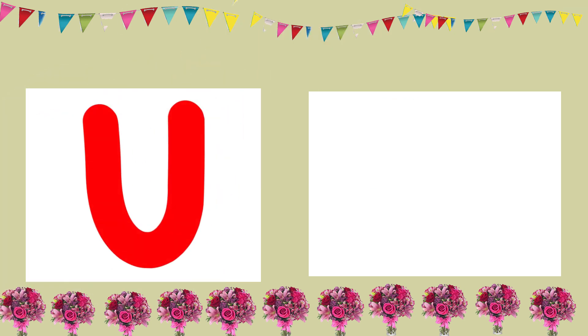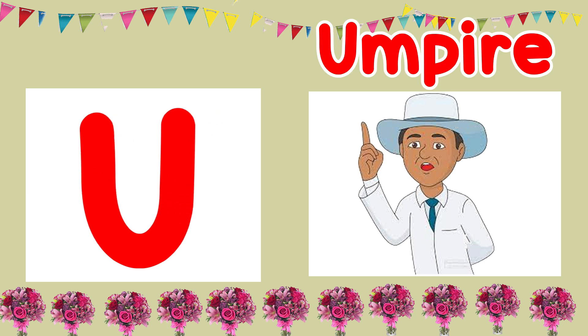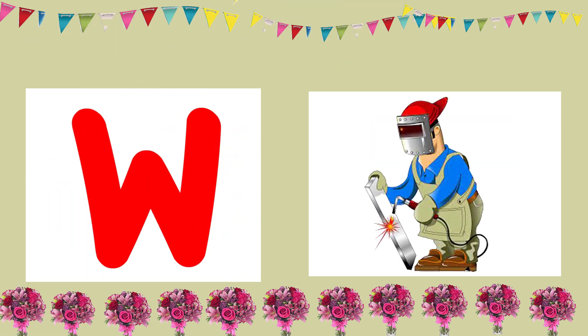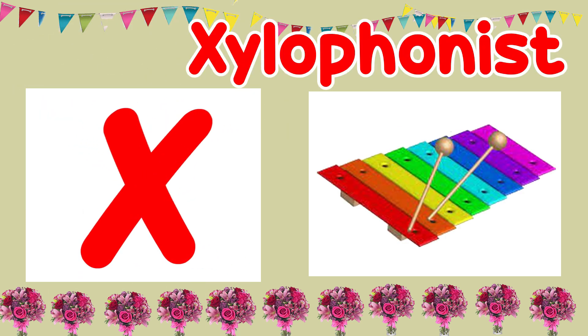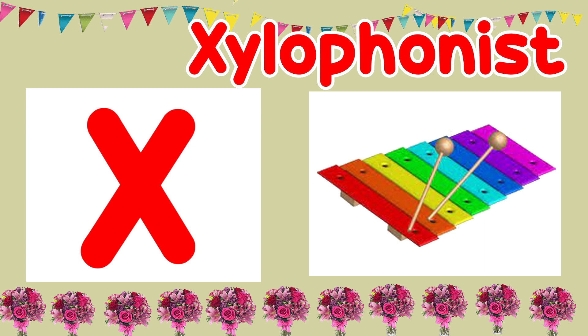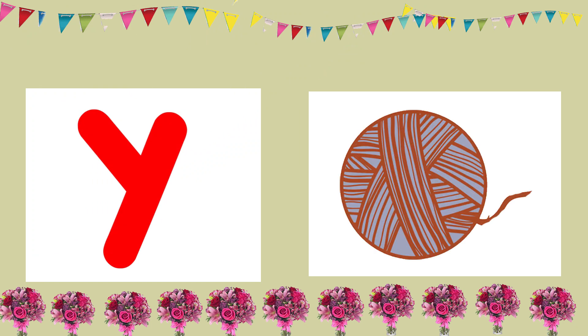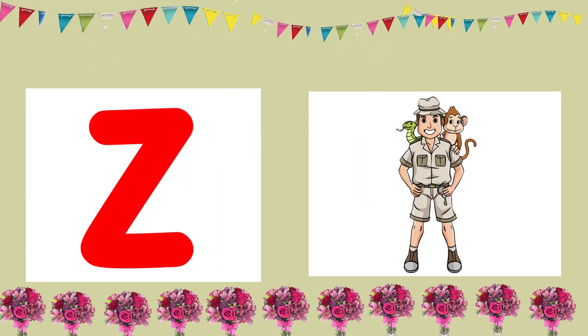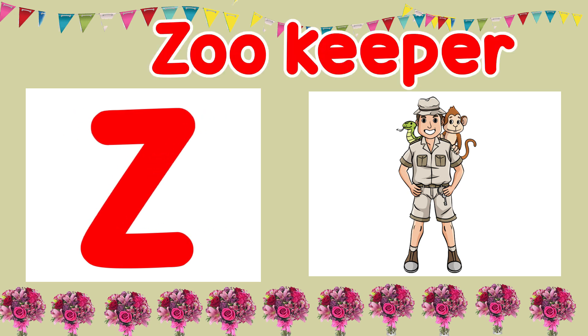U is for Umpire. U, U, Umpire. V is for Vendor. V, V, Vendor. W is for Welder. W, W, Welder. X is for Xylophonist. X, X, Xylophonist. Y is for Yarn Winder. Y, Y, Yarn Winder. Z is for Zookeeper. Z, Z, Zookeeper.